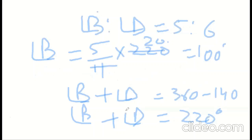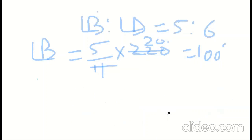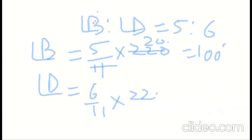Since angle B is 100 degrees and the total is 220, angle D will be equal to 6 by 11 into 220 degrees, which equals 120 degrees.